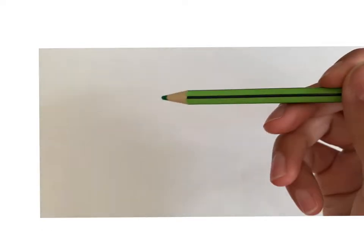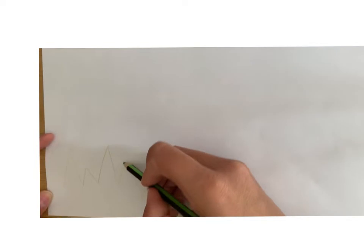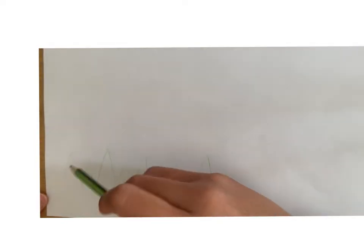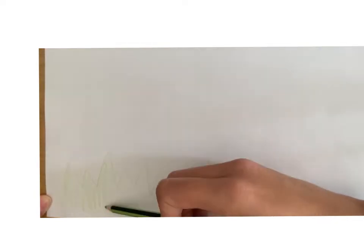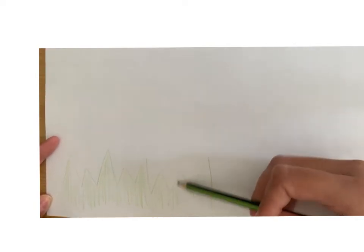Today we're going to draw a garden together and I'm going to use colours. The first colour I'm going to use is green. I'm going to start with some nice green grass. I'm going to do some triangle spiky shapes to make some green grass.